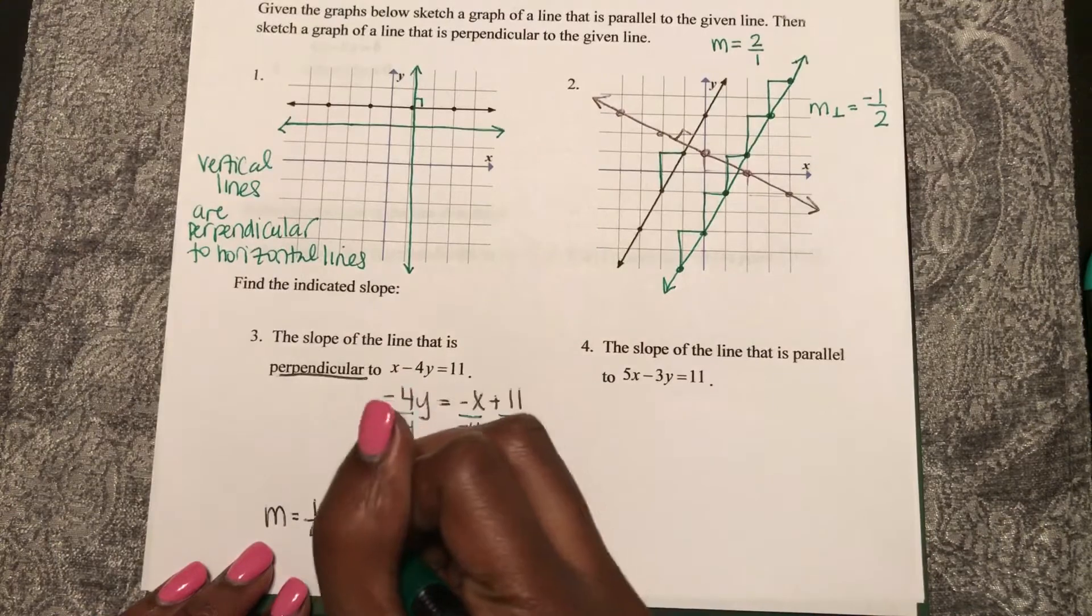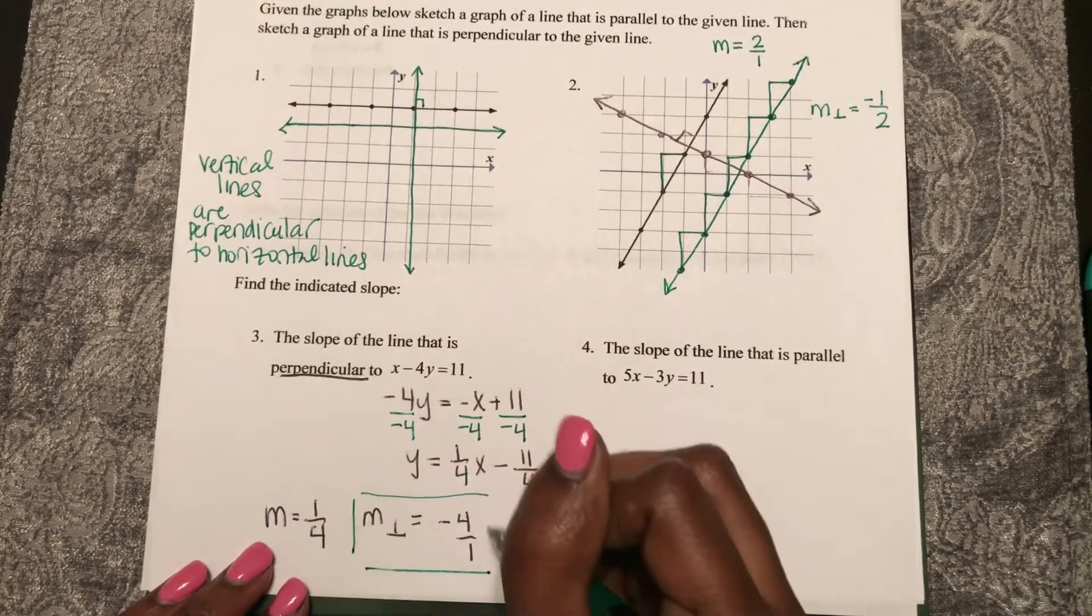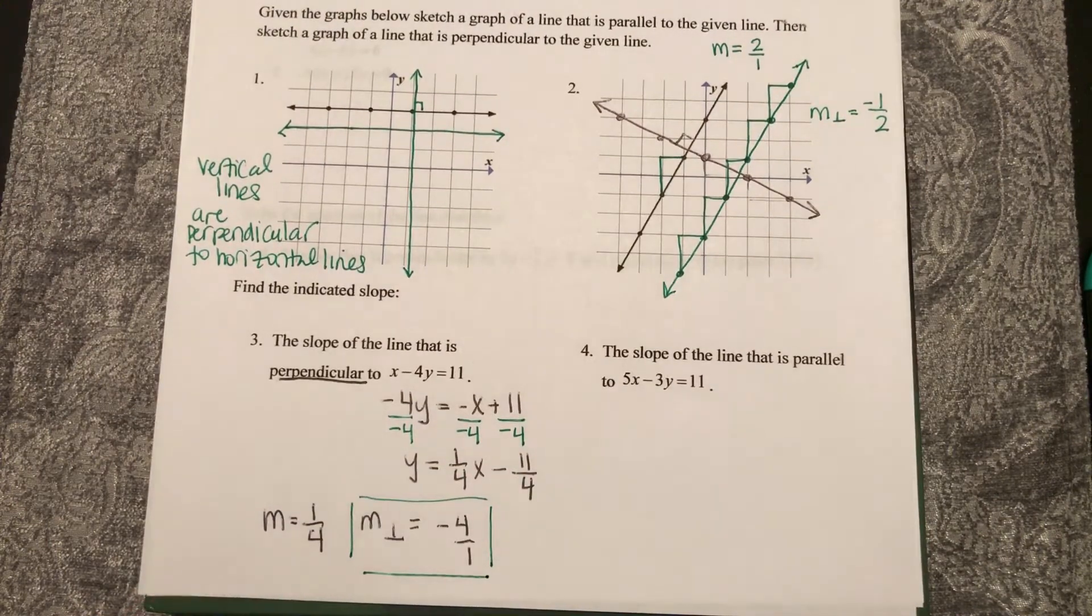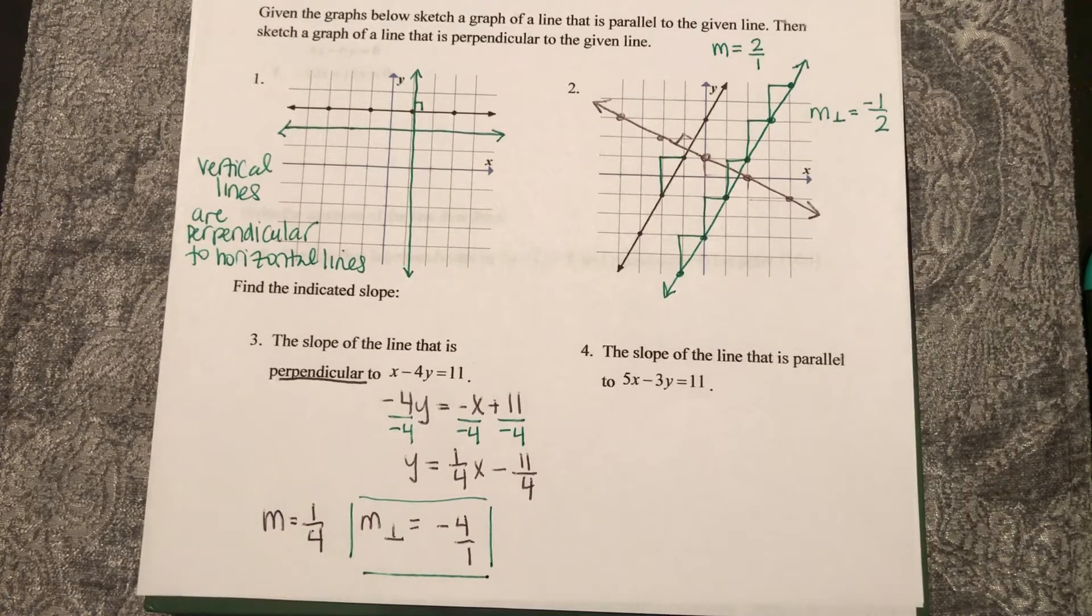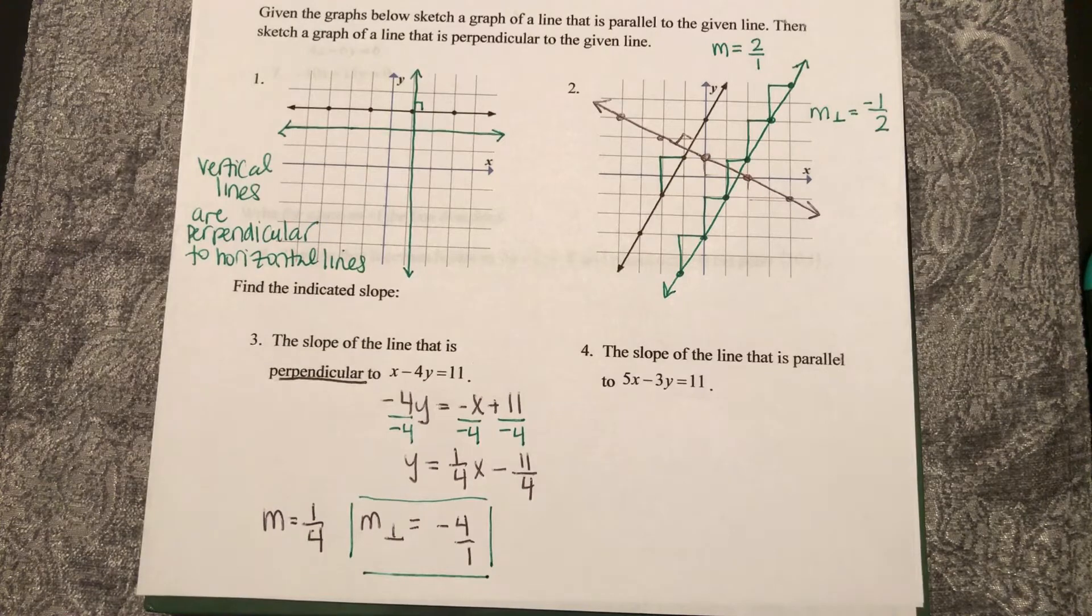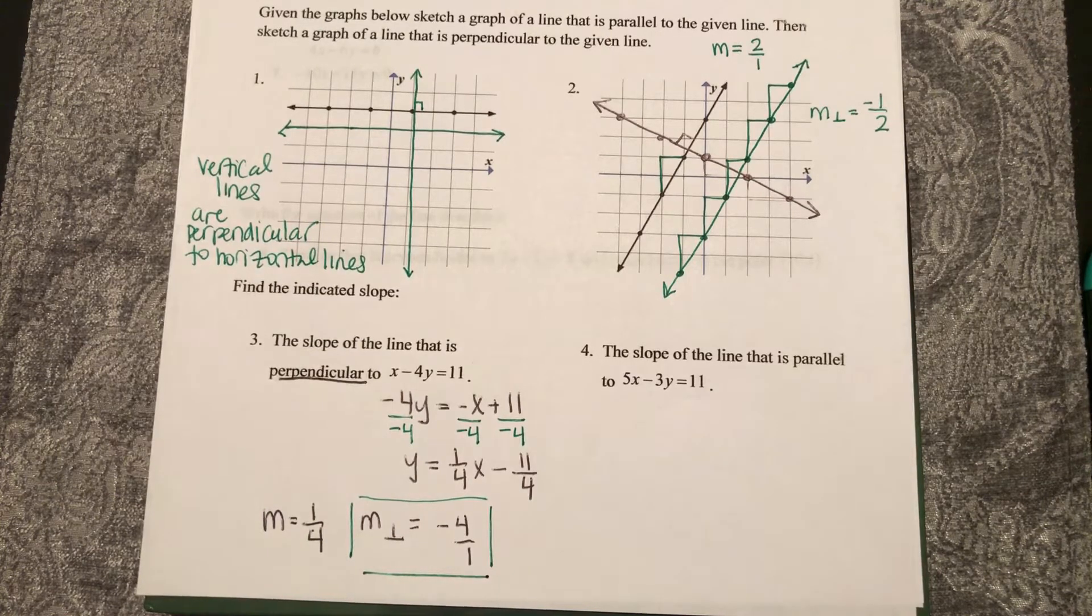So we find our slopes by converting to slope-intercept form, and then perpendicular lines have opposite reciprocal slopes.